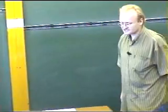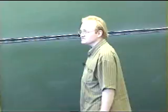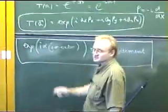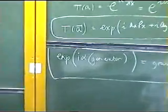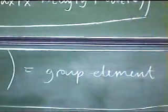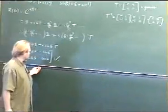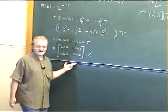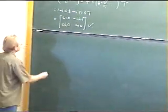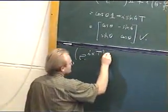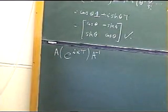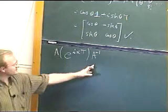Yesterday we learned that we should focus on irreducible, inequivalent representations. Now we're focusing on generators. A natural question is: what does focusing on inequivalent irreducible representations imply at the level of the generators? To figure that out, we'll explore properties of the matrix exponential. Let's write our group element as e to the i alpha T, and perform a similarity transformation on it: A times the group element times A inverse.